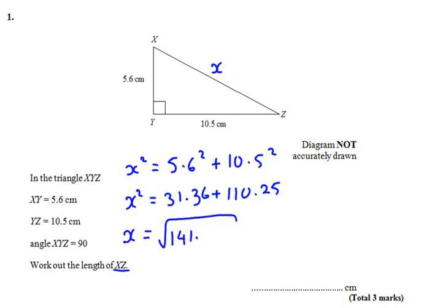The answer is 11.9 cm. For the marks, you get one mark for correctly squaring either of these values, one mark for adding them together, and one mark for the correct final answer of 11.9. Three marks total.